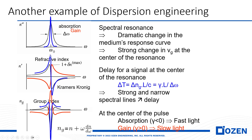On the other hand, for the blue curve, the real part of the refractive index corresponds to a gain plot. For this reason, looking at the group index, we can see a negative group index, which can be used as fast light. Just by engineering the structure or material, we can change the absorption and gain. If we change the absorption and gain, we get different behavior in the group index. The group index is related to the delay line and is very important for photonic integrated circuits.